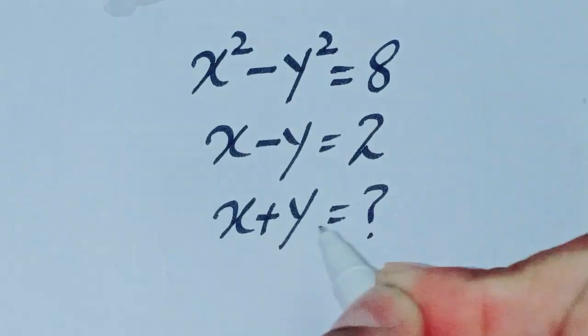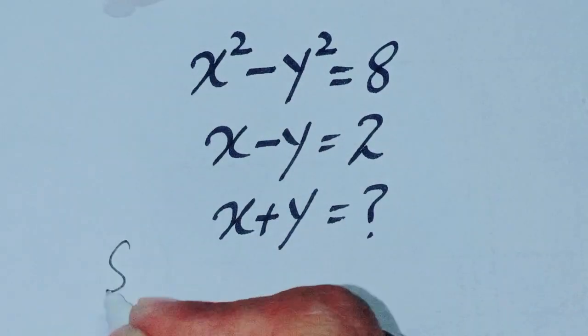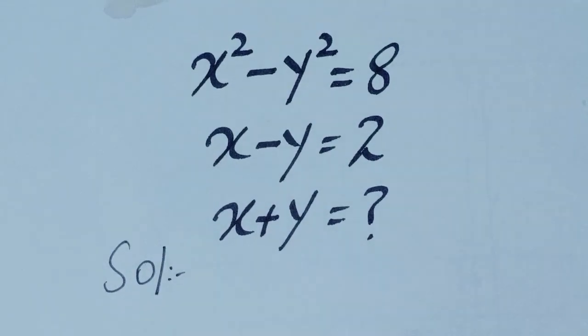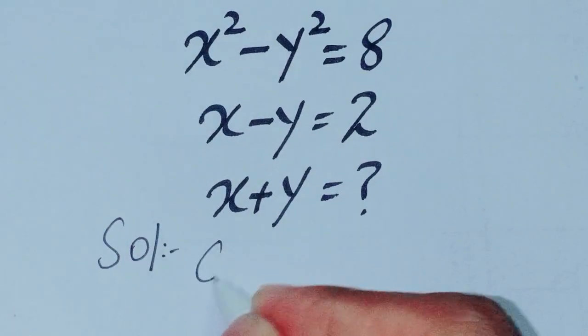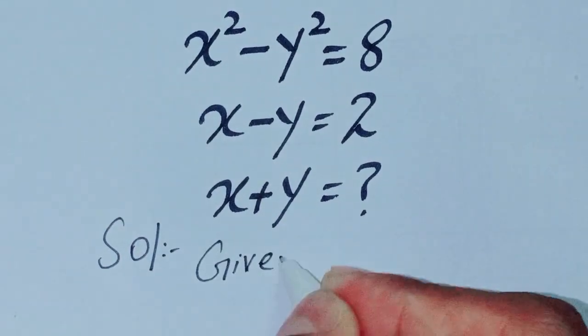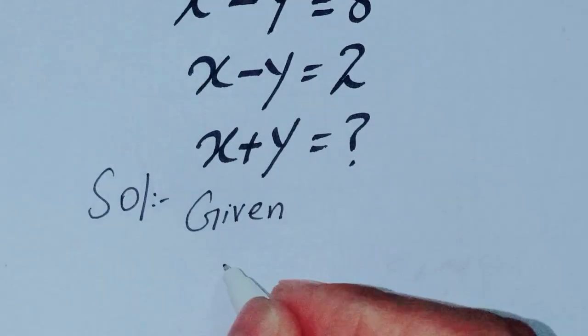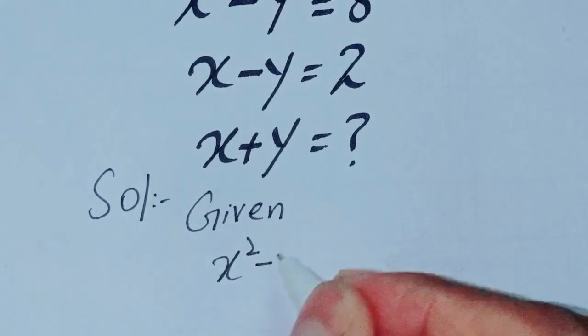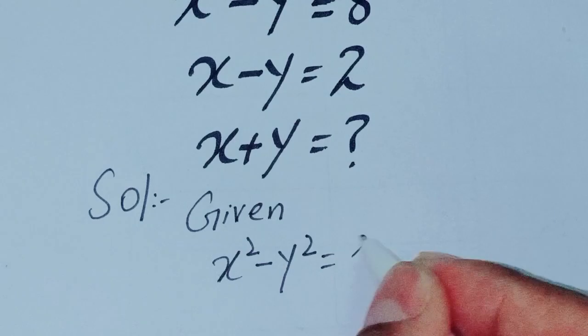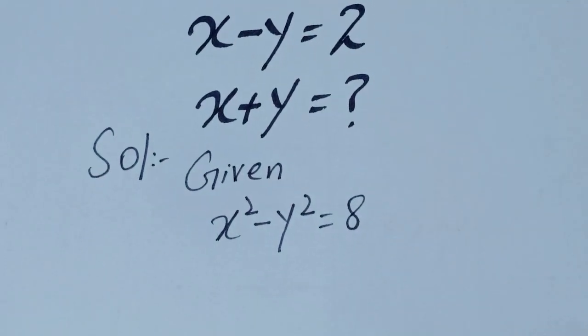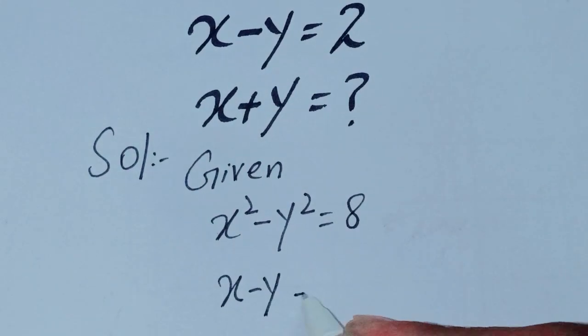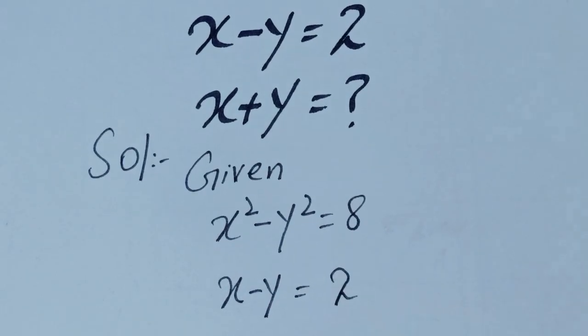Then find x plus y. Let's start the solution. First of all, given: x squared minus y squared is equal to 8, and x minus y is equal to 2.